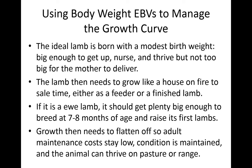Birth and weaning weights are impacted by both the genetics of the lamb and of the mother, as they influence the uterine environment and milk production. Post-weaning and yearling weights relate more to marketing. We've also been discussing hoggett weights — an Australian/New Zealand term for an animal at about 18 months of age — as a way to predict adult ewe weights. If we wanted an ideal growth curve, a lamb would be born with a modest birth weight: big enough to nurse and thrive, but not too big for the ewe to deliver.